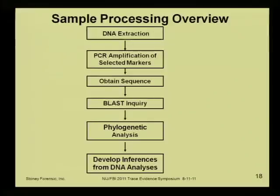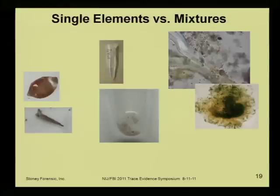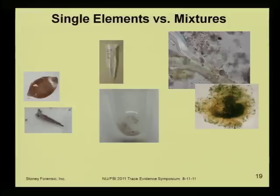An example of the processing we do: there's a sequence going from DNA extraction, PCR amplification, getting a sequence, and then the interpretive steps start — you do an inquiry into the giant data bank with the alignment tool BLAST, then a phylogenetic analysis, and then do your proper interpretation of what species you get out of it. This can work on single elements like a thorn or a seed. It also can work on mixtures, and in fact if you think you're dealing with a single element, you often find you're dealing with a mixture, because it doesn't take very much to cause the signal from another species to appear.